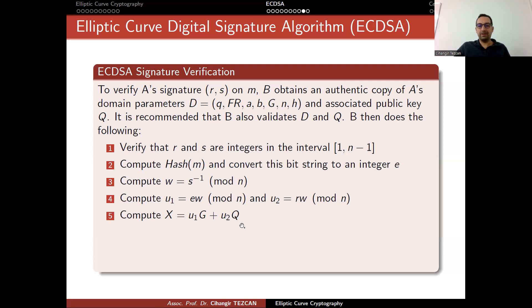Then computes the point x, which is actually u1 g plus u2 q. As you can see, these capital letters are actual points on the elliptic curve. g is the base point, q is the public key of the signer a. u1 and u2 are the values you obtain here. You add these two points and obtain a point on the elliptic curve.